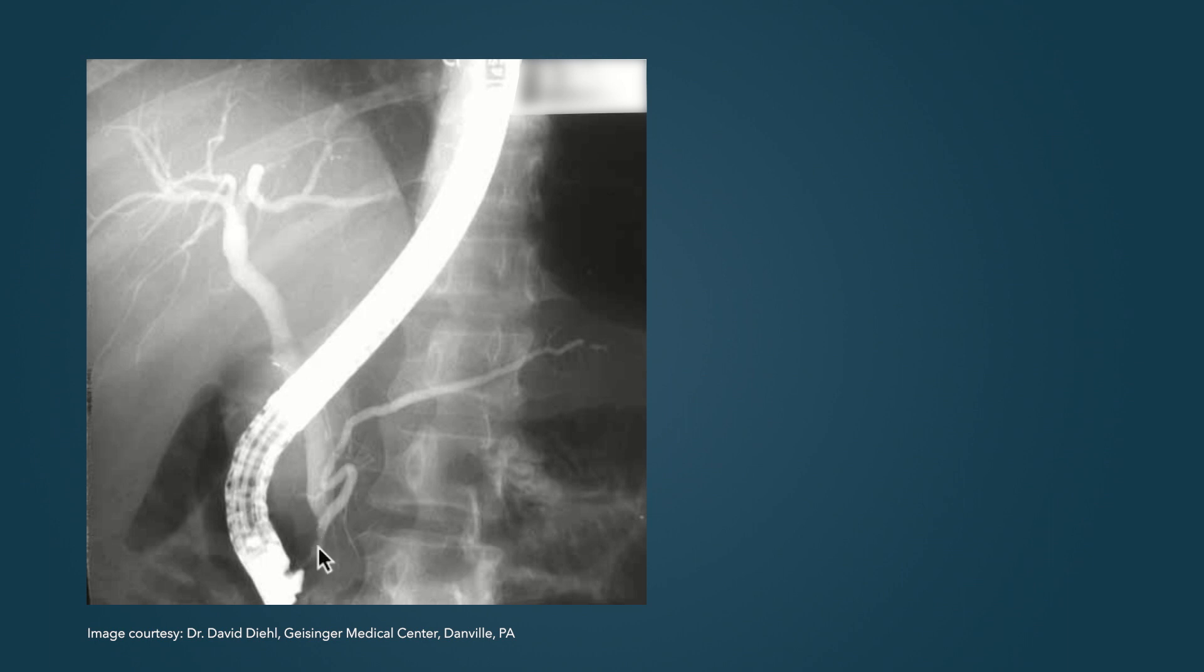The pancreatic duct has a more tortuous anatomy, but this is a very typical appearance. This area of the pancreatic duct is called the genu, which is a Latin term for knee. And this main pancreatic duct can be followed all the way out to the tail.